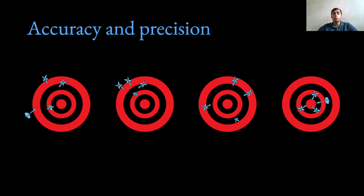Whereas precision is the variability between your observed values. So the lower the variability, the more precise your test is.